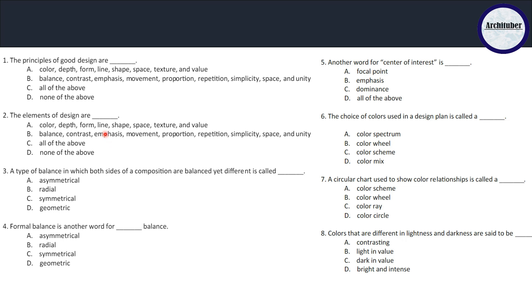Discussing our first question: the principles of good design are - is it A: color, depth, form, line, shape, space, texture and value? Are these the principles or elements? These are the elements. Talking about B: balance, contrast, emphasis, movement, proportion, repetition, simplicity, space and unity - these are your principles. So B is the correct answer.